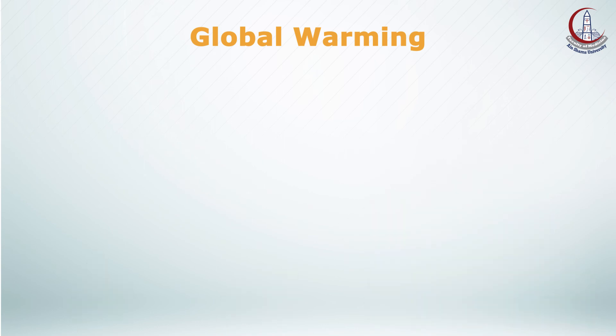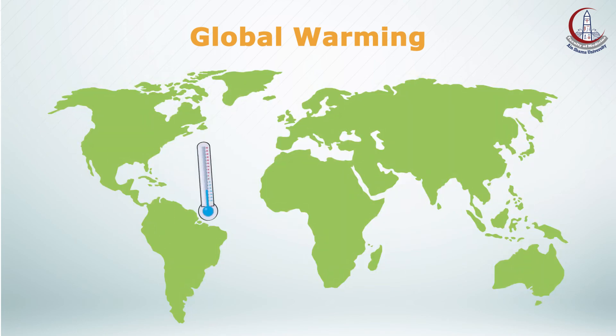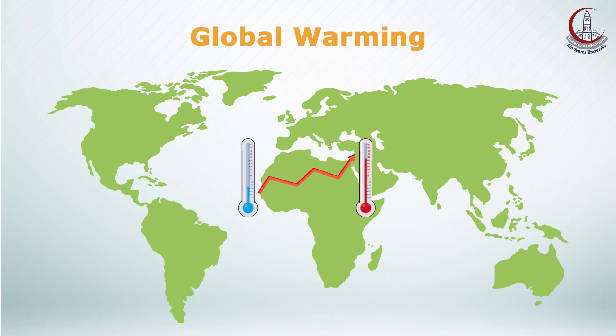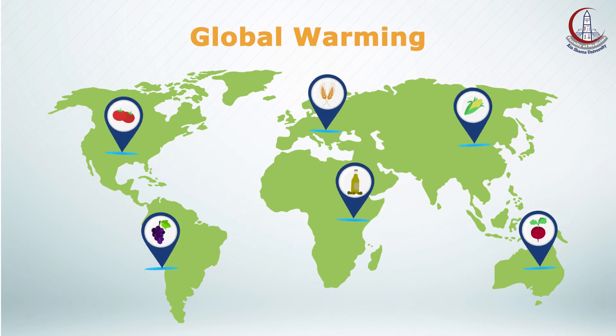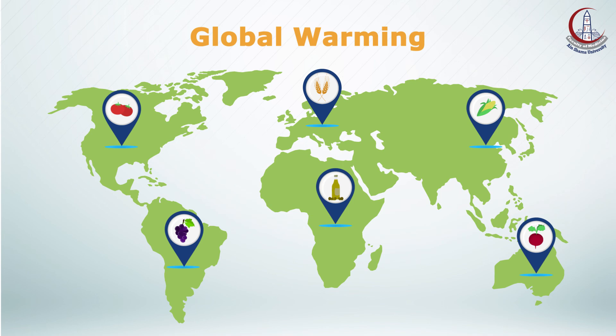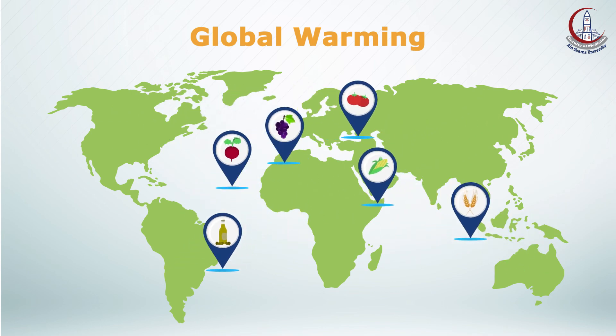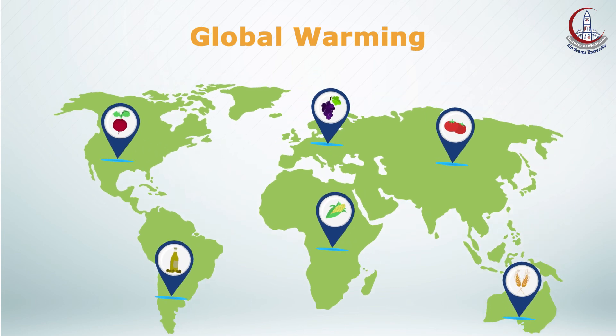Another effect of global warming is directly on plants. Crops and plants have an optimum atmospheric temperature to be cultivated. Those plants will not grow if this temperature increases, thus changing the cultivated plants' distribution.